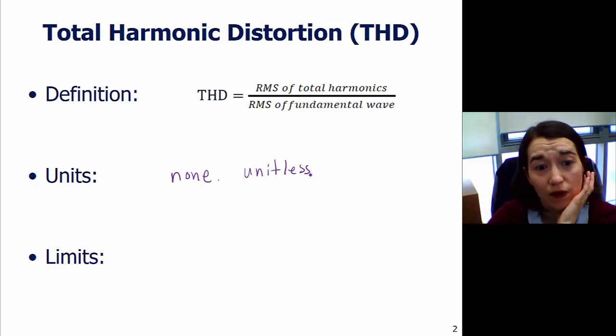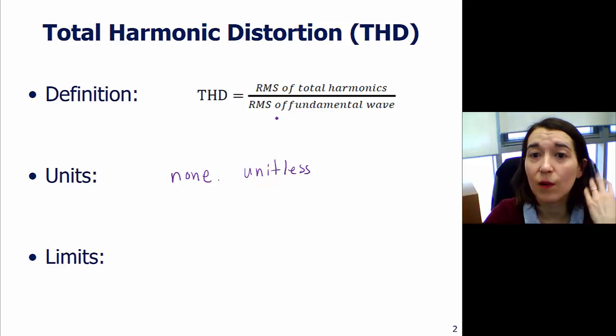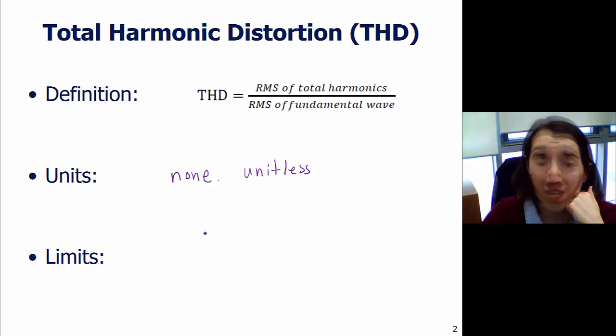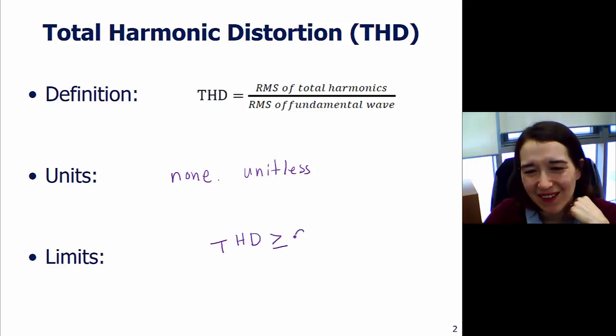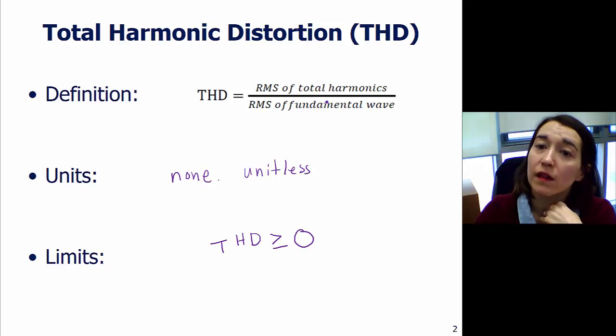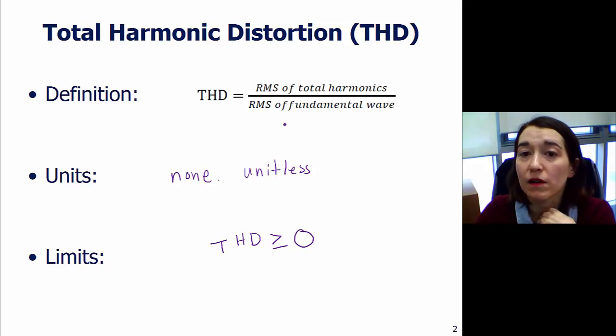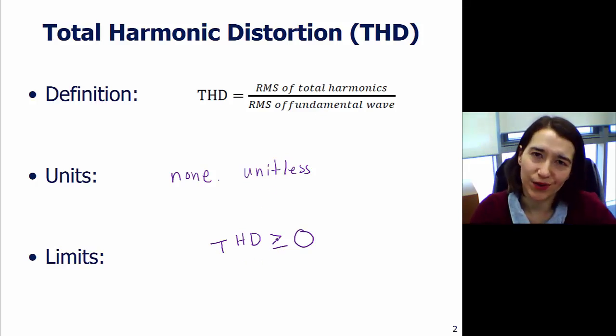For the limits, from this equation, RMS values are always positive, so THD must be greater than or equal to zero. But there's no upper limit here because the RMS value of the harmonics could be very, very large, much greater than the fundamental waveform. So the only limitation is it must be greater than or equal to zero.